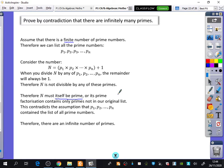Or its prime factorization contains only primes not in our original list. It may be divisible by a higher prime number not in our list. This contradicts the assumption that there's a complete list going up to Pn containing all prime numbers, which means there are infinitely many primes.